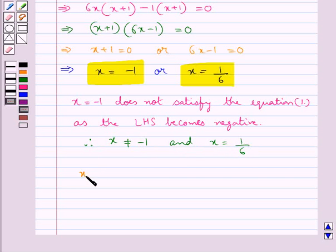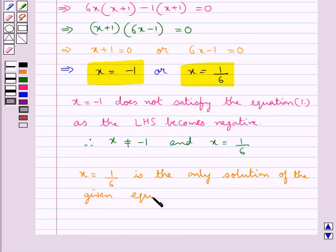Therefore we have x equal to 1 upon 6. Thus x equal to 1 upon 6 is the only solution of the given equation.